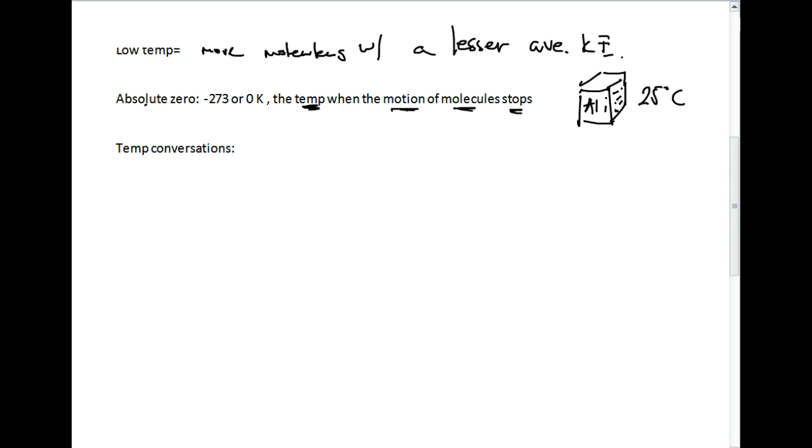Just vibrating back and forth at 25 degrees Celsius. But if we cool this block of aluminum down cold enough, and the temperature measurement is negative 273 degrees Celsius, or we say that zero Kelvin, which is a new temperature scale that we're going to talk about, the motion of these molecules that are vibrating will actually stop.